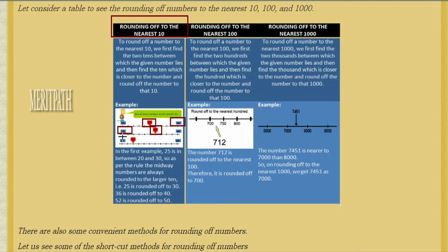Next example: 36. 36 is between the 10s of 30 and 40. When we round off this number, it is more than halfway — past 35 — so it is nearest to 40.